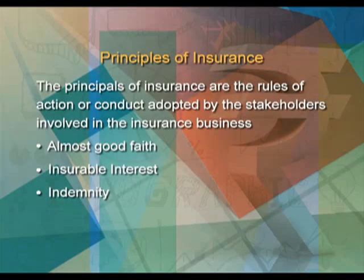The next principle is proximate cause. According to this principle, an insurance policy is designed to provide compensation only for such losses as are caused by the perils stated in the policy. When the loss is the result of two or more causes, the proximate cause means the direct, most dominant and most effective cause of which the loss is the natural consequence.